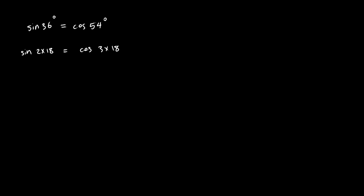Now I'm going to use the double angle identity for sine and the triple angle identity for cosine. That way I will have everything in terms of sine of 18 and cosine of 18, and I'll be able to solve for sine of 18 degrees. The double angle formula for sine is: sine of 2θ equals 2 times sine θ times cosine θ. The triple angle formula for cosine is: cosine of 3θ equals 4 times cosine cubed θ minus 3 times cosine θ.